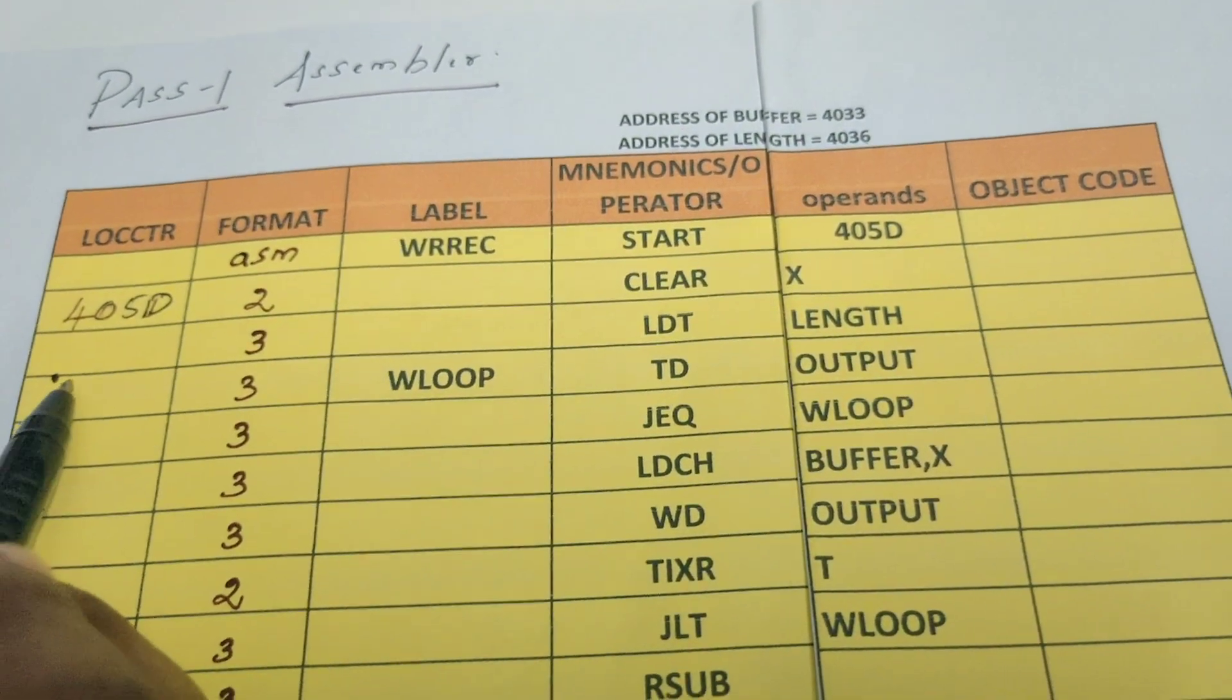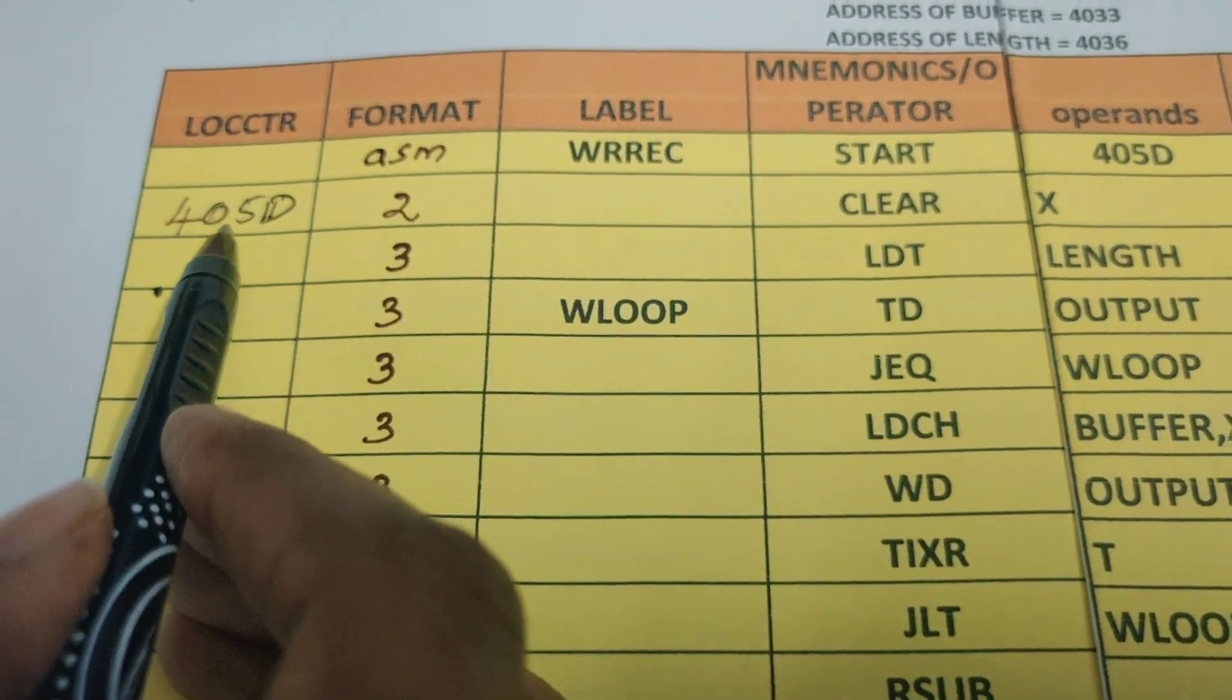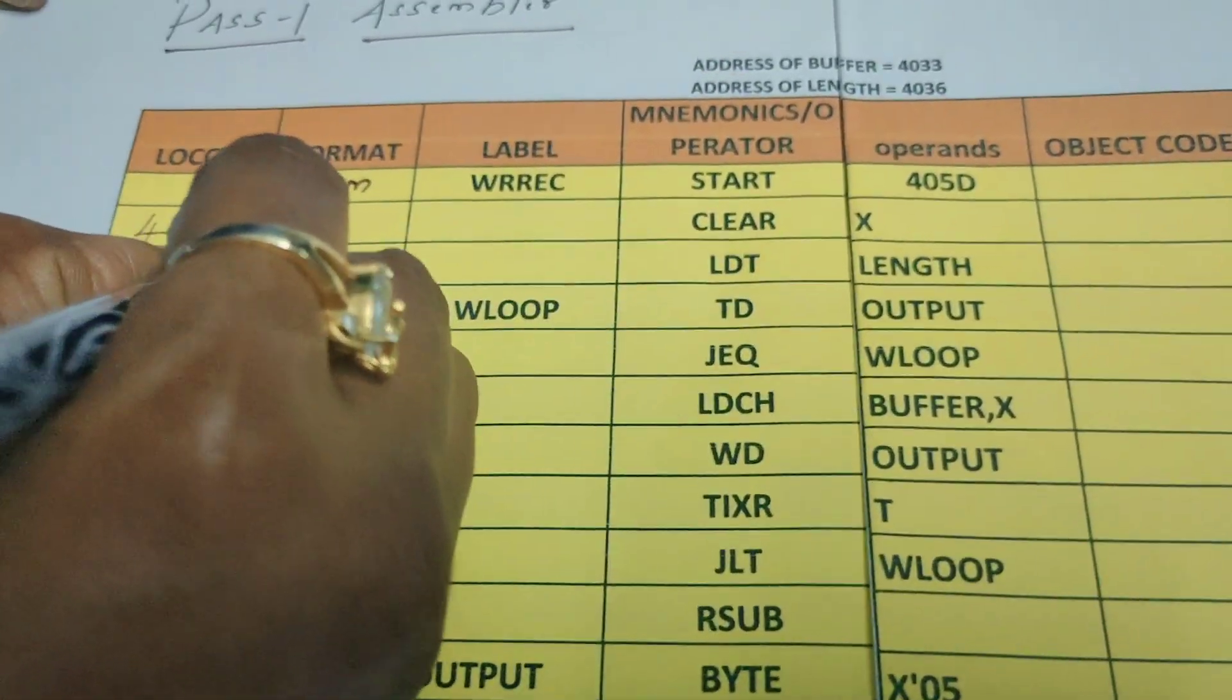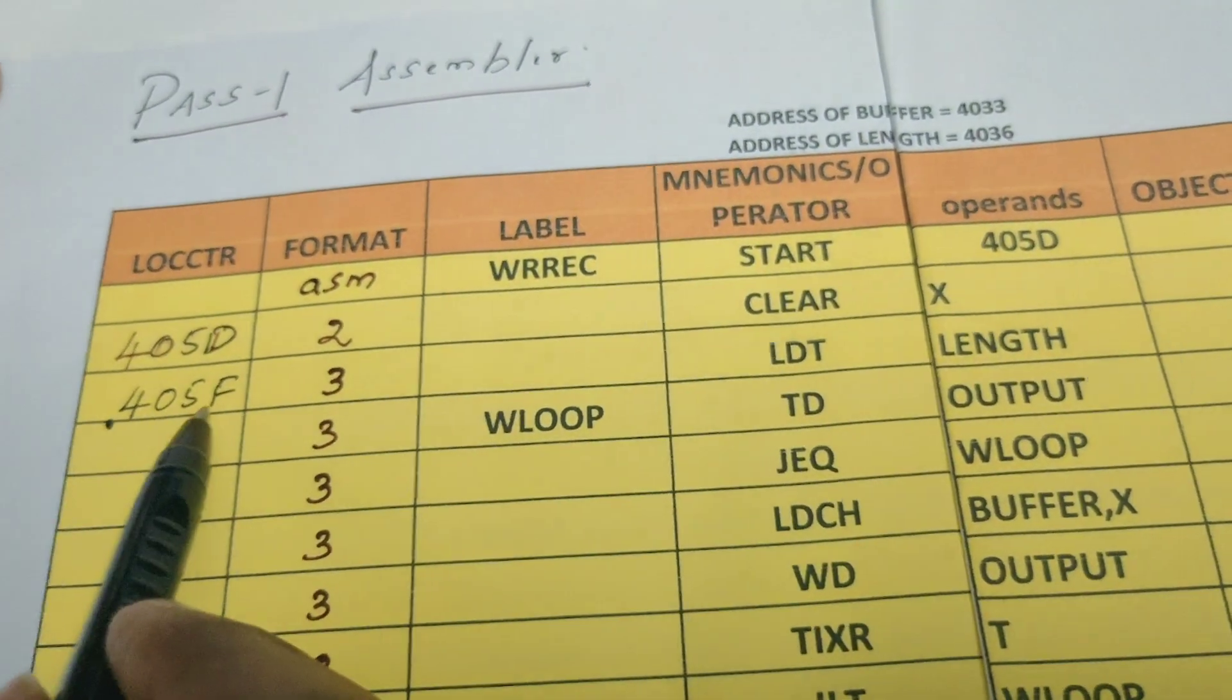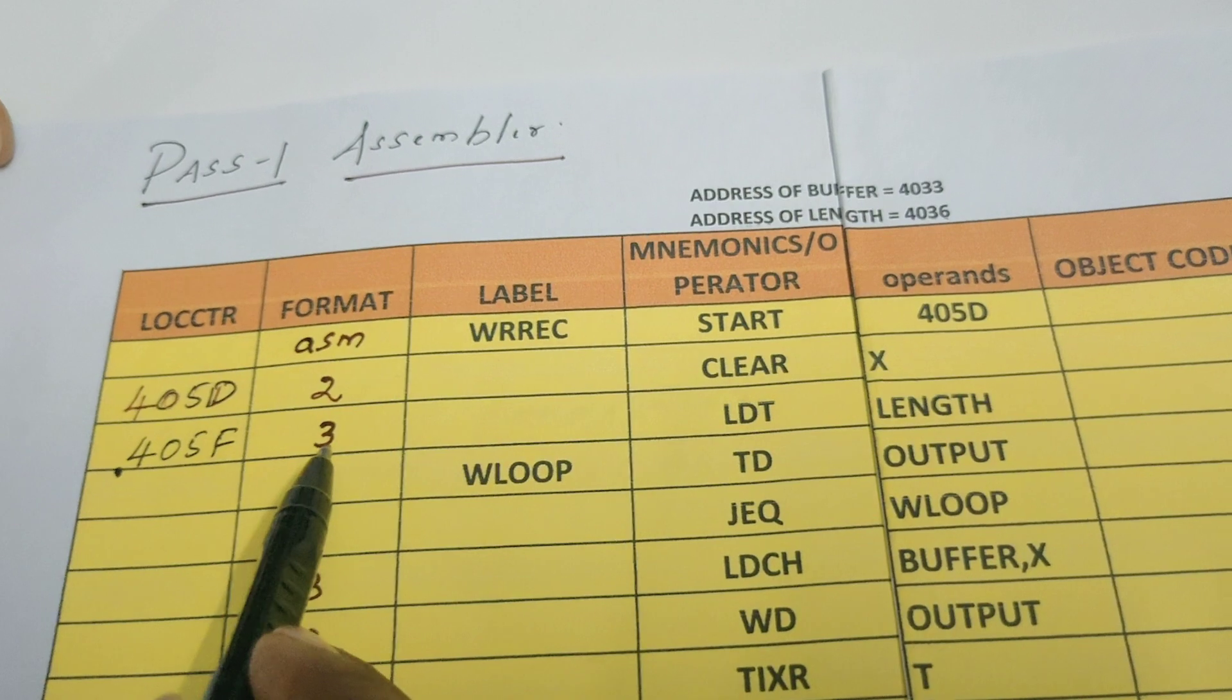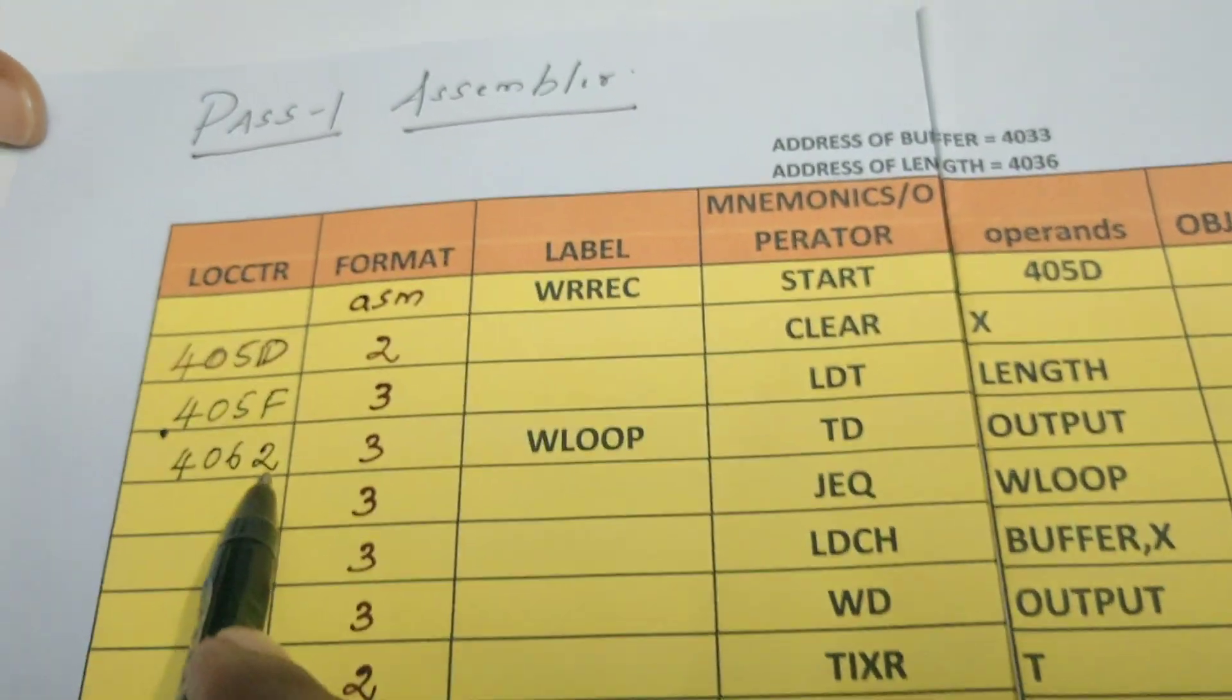Now the starting address of CLEAR X is 405D. This instruction occupies 2 bytes. What is the address of the next instruction? Very simple, 405D plus 2. But we need to remember that these values are given in hexadecimal. All the addresses are hexadecimal values, so when you are adding we have to perform hexadecimal addition. 405D plus 2 is 405F. Next, the starting address of LDT LENGTH is 405F. This instruction occupies 3 bytes, so 405F plus 3 is 4062. You can use the calculator also to perform this addition.